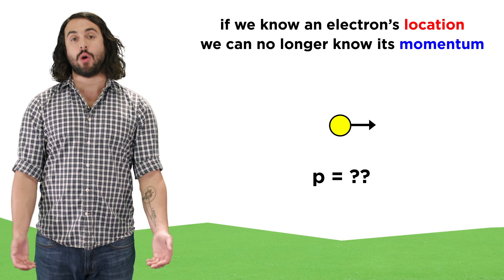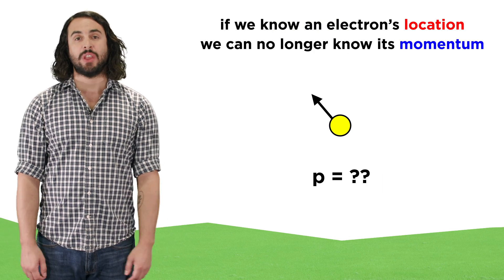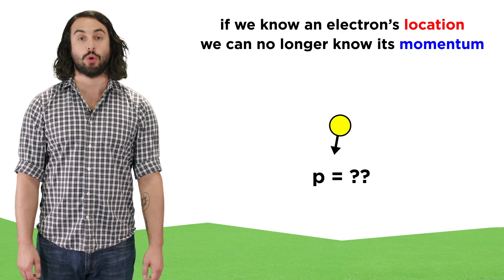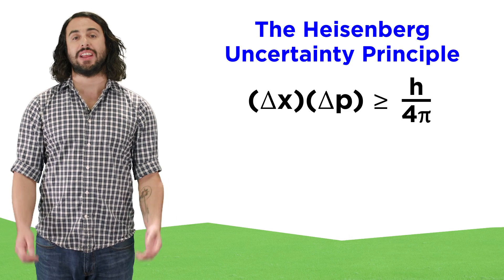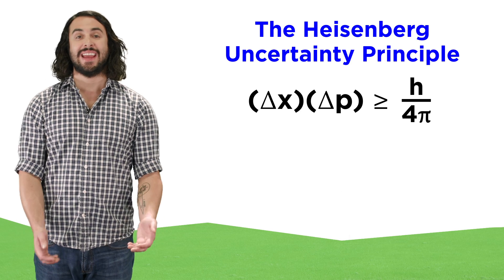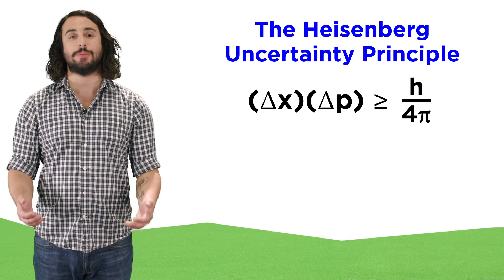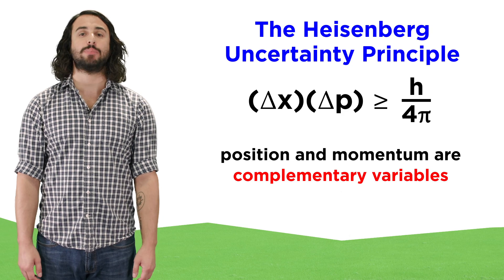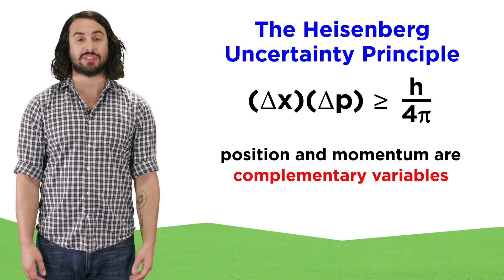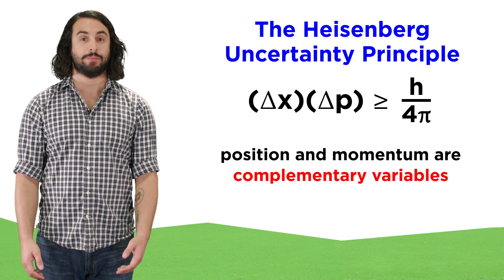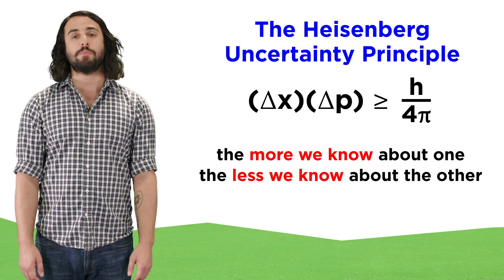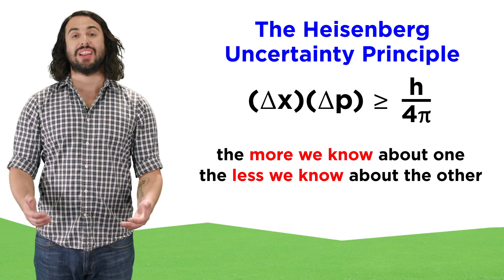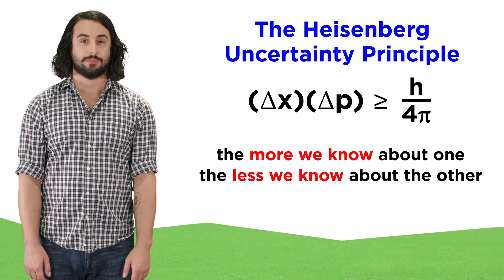However, if we know its location, we can no longer know its precise momentum, or what it's doing, and this notion is summarized in Heisenberg's uncertainty principle. This states that when looking at complementary variables, like position and momentum, the more precisely one parameter is known, the less we know about the other.